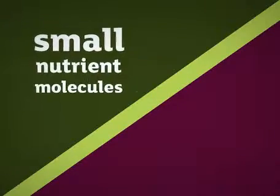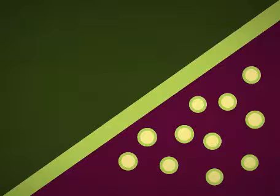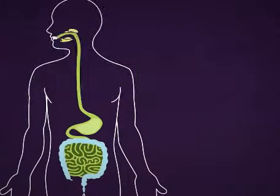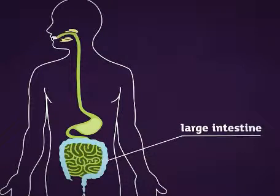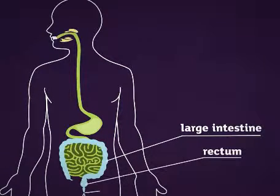These small molecules pass through the wall of the small intestine into the blood to be used by the body. Food that can't be digested moves into the large intestine and is eventually passed out of the body.